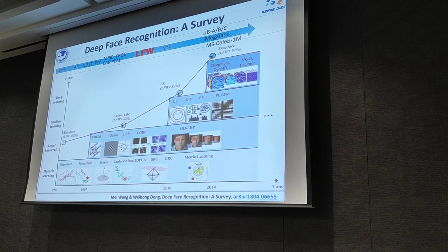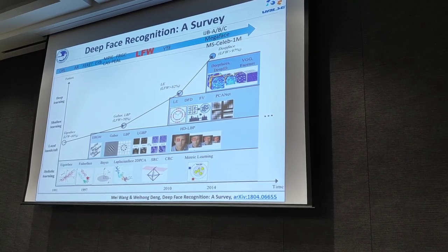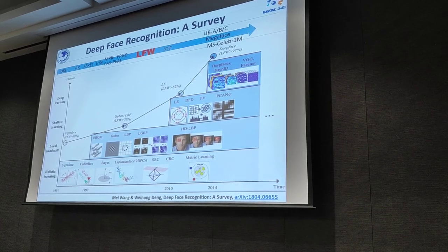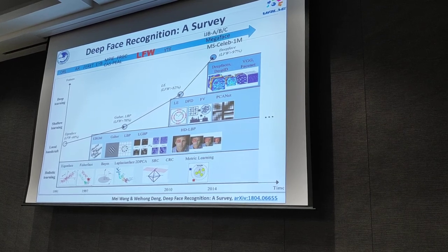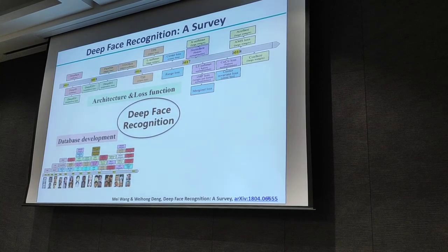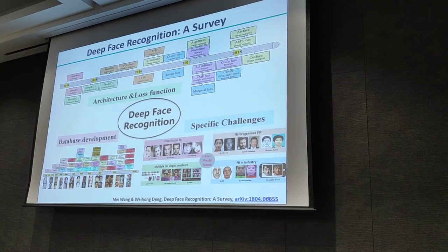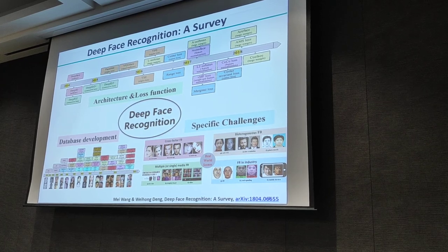The accuracy on the well-known Labeled Faces in the Wild benchmark boosted from about 90% to 99.8% in just 5 years. We are conducting a survey to review this dramatic development of deep facial recognition techniques, covering database development, network architectures, loss functions, and solutions to realistic challenges. You can refer to our arXiv paper for details, and any comments and suggestions are welcome.